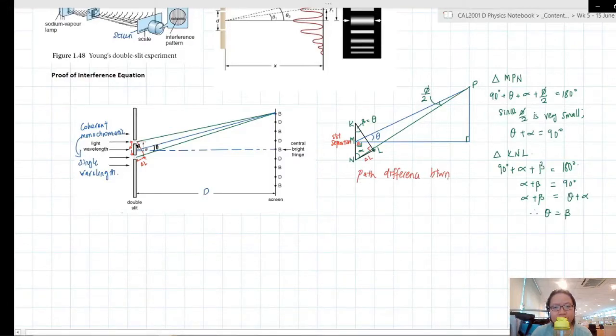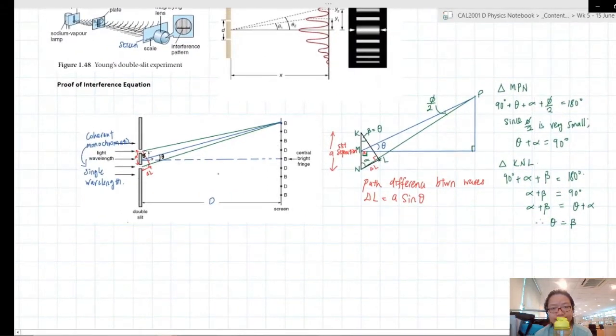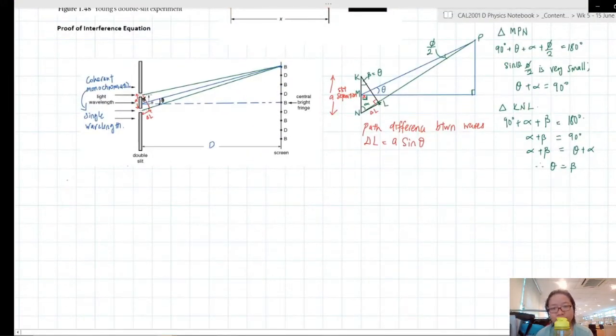So path difference, in this case, is between the waves. And your delta L here can be calculated using A sine theta, because sine theta is delta L over A. So delta L is A sine theta. So let's now prove. At the central position, point O, the delta L is 0. Because it's an isosceles triangle, they will meet at the same point, they will travel the same distance. So bright fringe is formed.